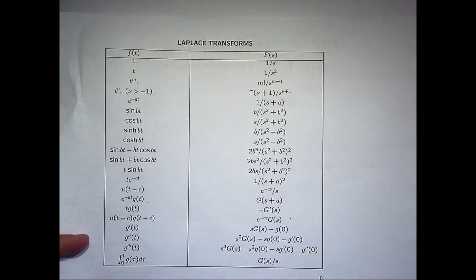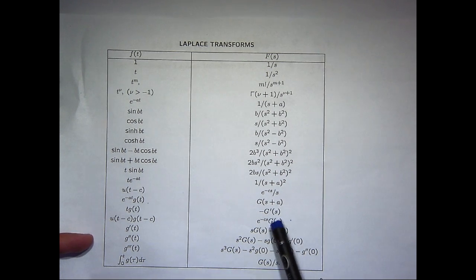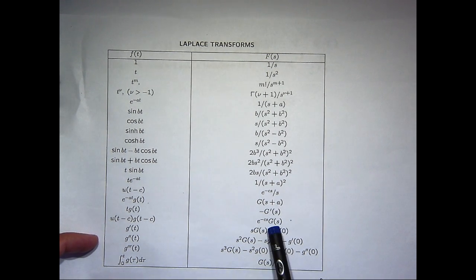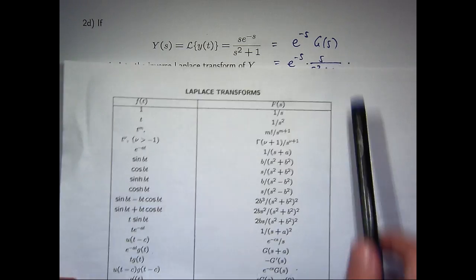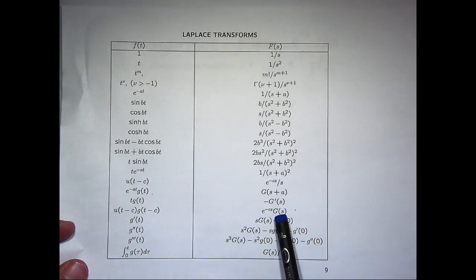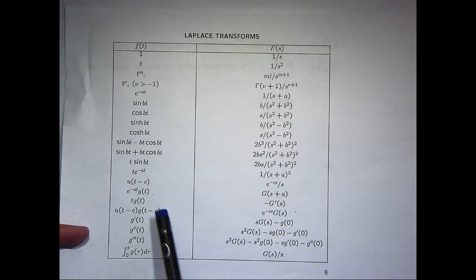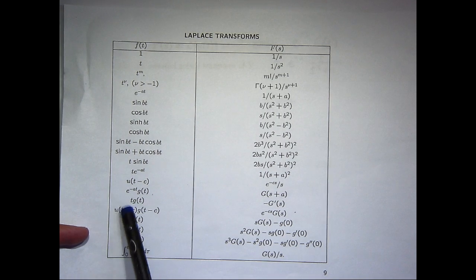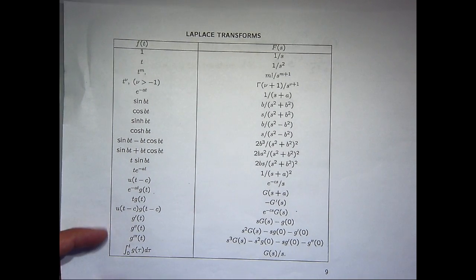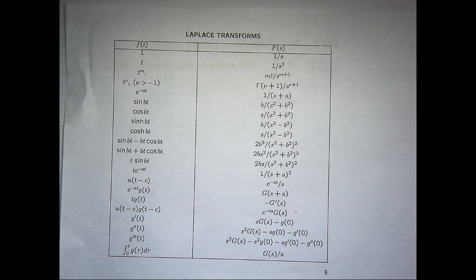If we look over to the left hand side, we see how to calculate the inverse transform. What you want to do is, firstly, calculate the inverse transform of big G. In this case, it's s on s squared plus 1. Then shift it c units, and then multiply through by this Heaviside step function. Now this is again a special theorem called the second shifting theorem.